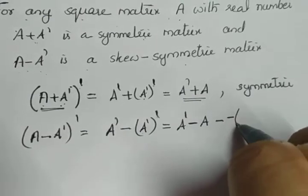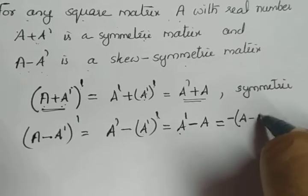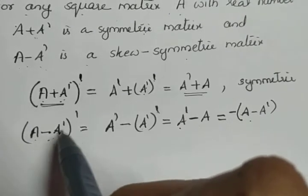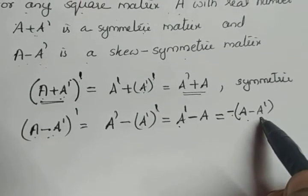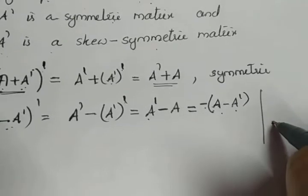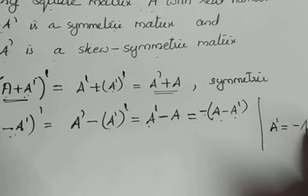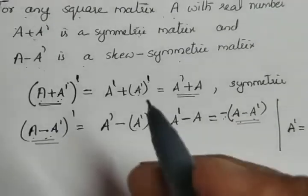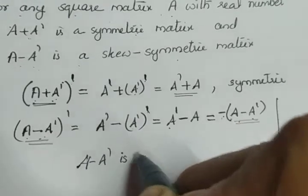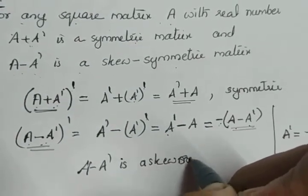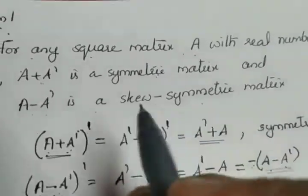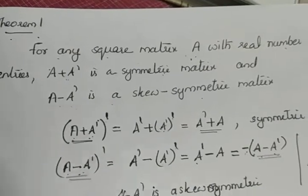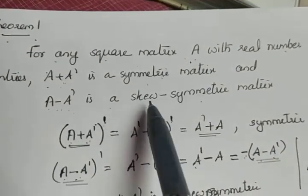If we take a negative outside, minus A becomes positive A and A transpose becomes minus A transpose. So we are getting the negative of this matrix — when taking the transpose of A minus A transpose, we get minus of (A minus A transpose). That means, by the property of skew-symmetric matrices where A transpose equals minus A, A minus A transpose is a skew-symmetric matrix. So Theorem 1 states: if A is a square matrix with real number entries, then A plus A transpose is symmetric and A minus A transpose is skew-symmetric.